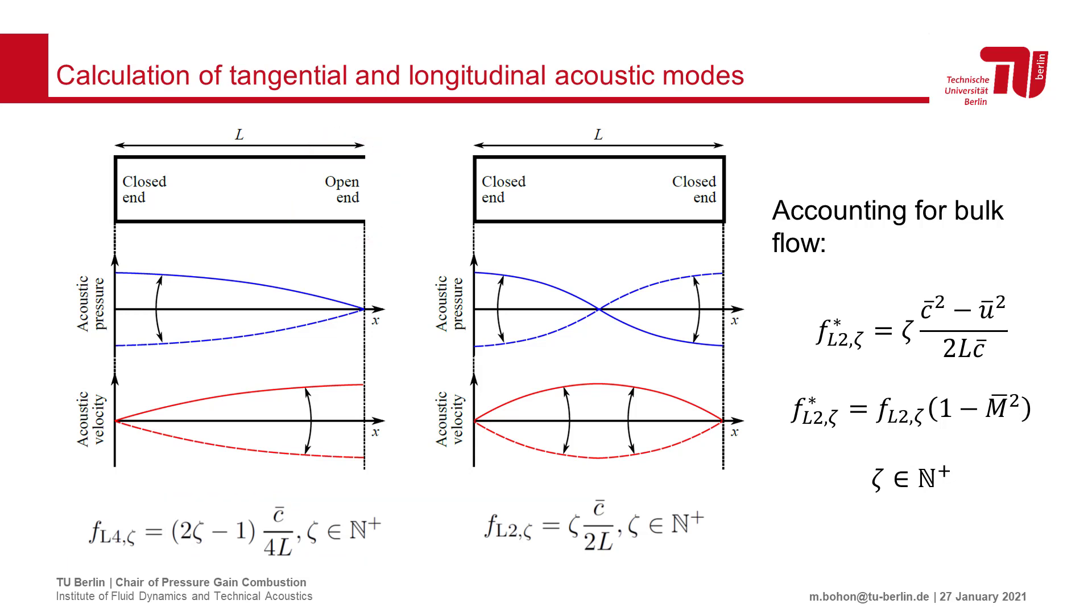When the outlet is choked, similarly to rocket combustors, the outlet will behave as a closed end and will exhibit a half wave resonance. The resonant frequency at these conditions should then be corrected by the average Mach number in the combustor.